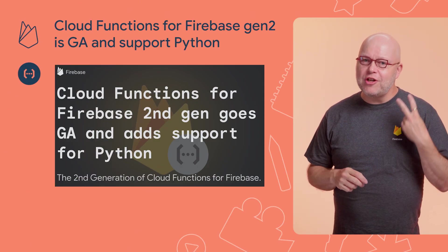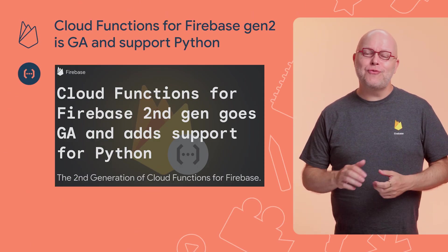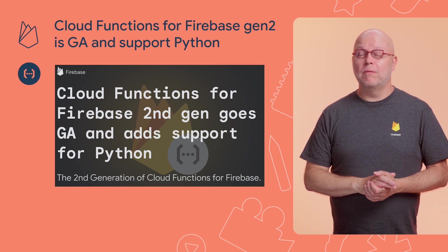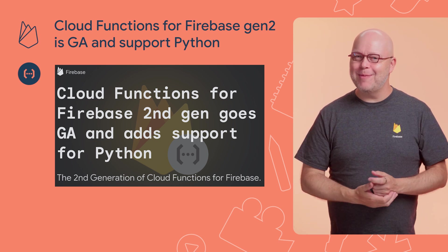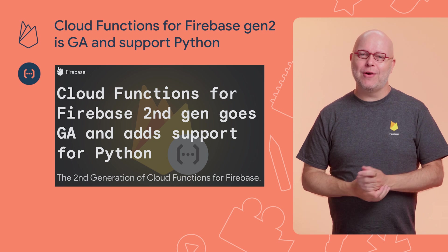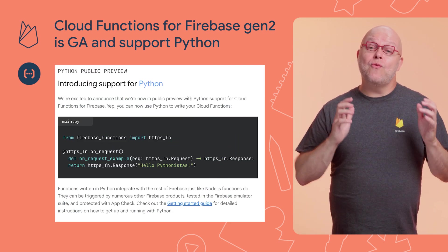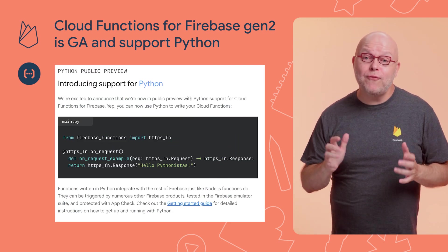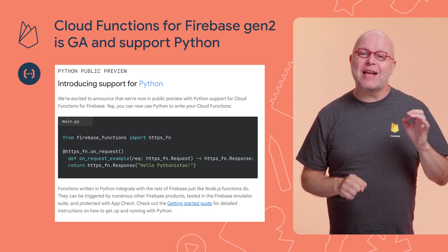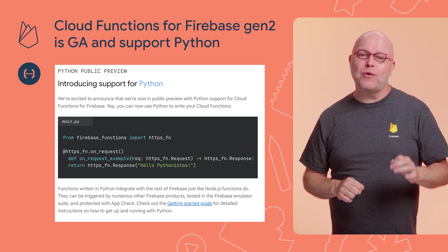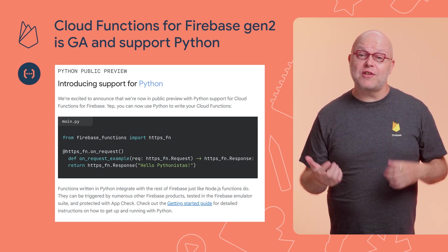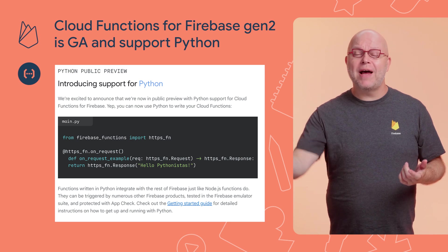We announced generation 2 of Cloud Functions for Firebase last year, and we pre-announced Python support at Google I/O. Well, Gen 2 is now generally available, and Python support is now available in preview. This means that in addition to faster, more efficient functions thanks to the concurrency controls in Cloud Run, you can now write your Cloud Functions in Python, as we can see here, and you can call libraries such as Pandas and NumPy and more.